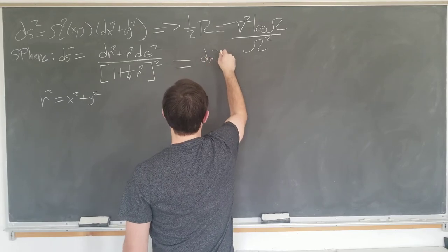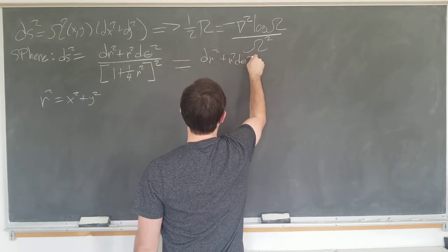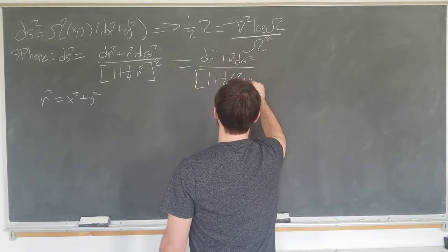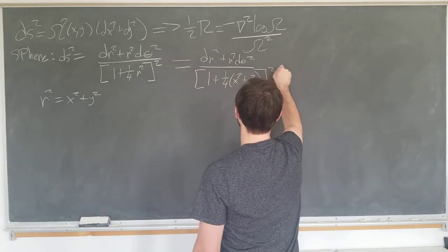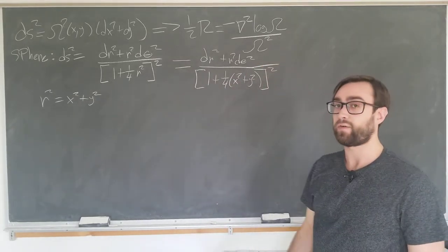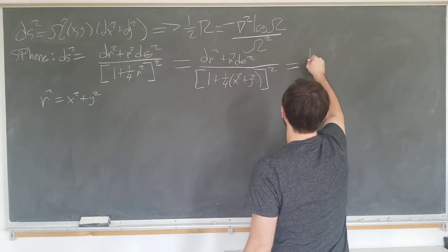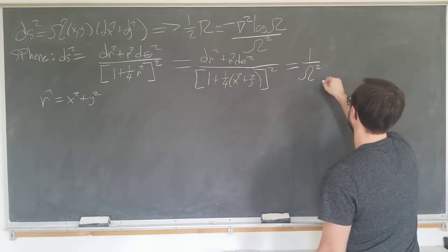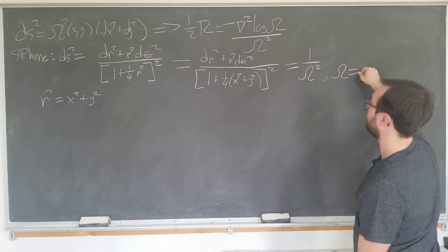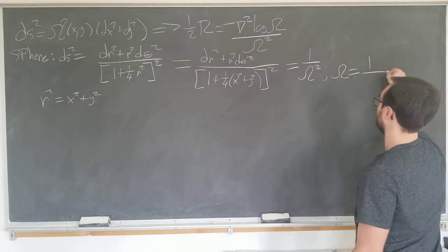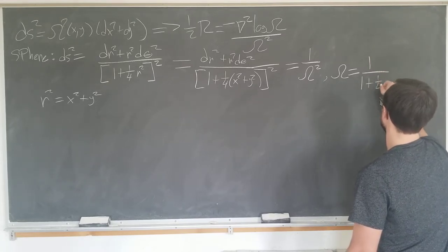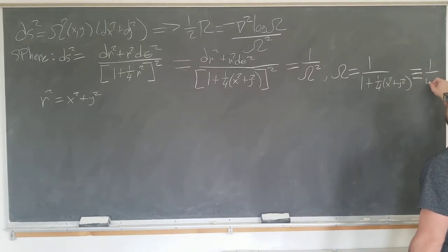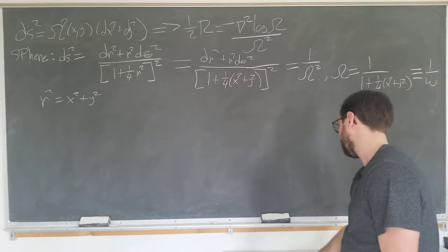This is dr squared plus r squared d theta squared over one plus a quarter of x squared plus y squared all squared. From here we can identify the function omega. One over omega squared is this thing here. So omega is equal to one over one plus a quarter of x squared plus y squared, which we're going to define to be one over little omega, which is what we're going to use for the rest of the calculation.